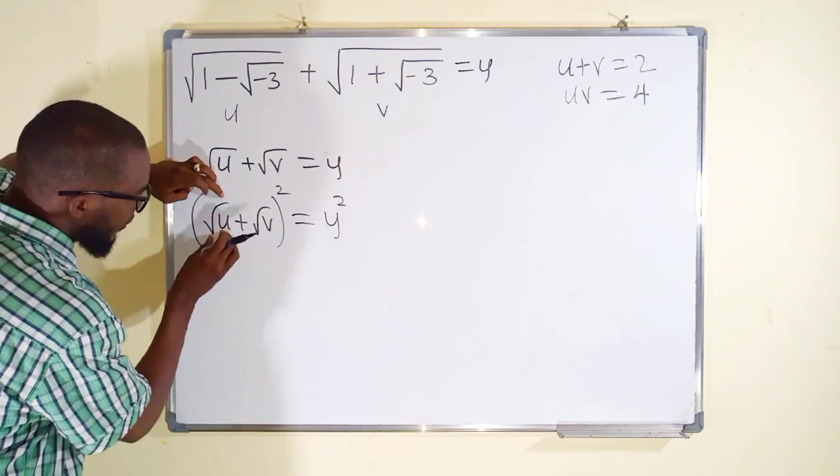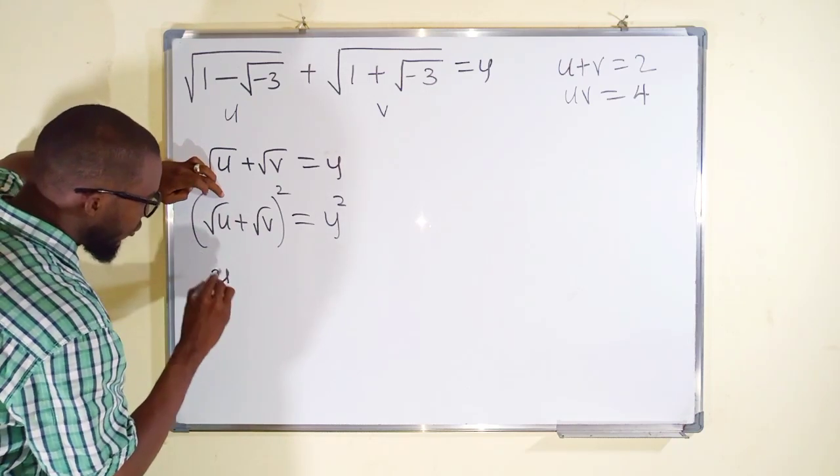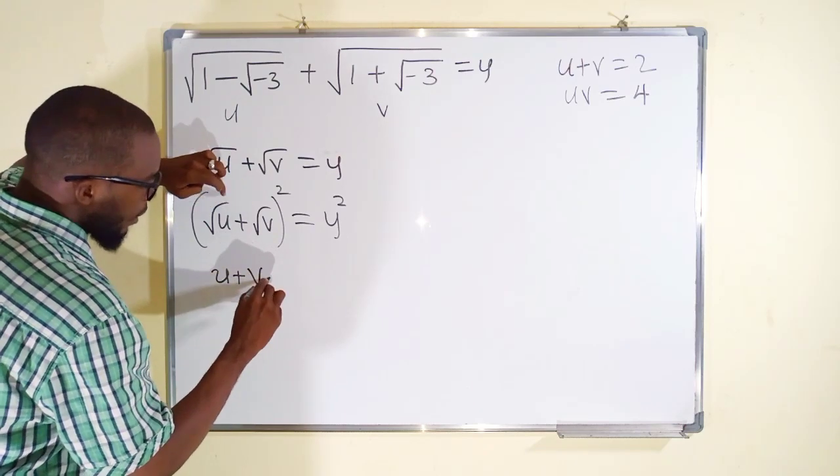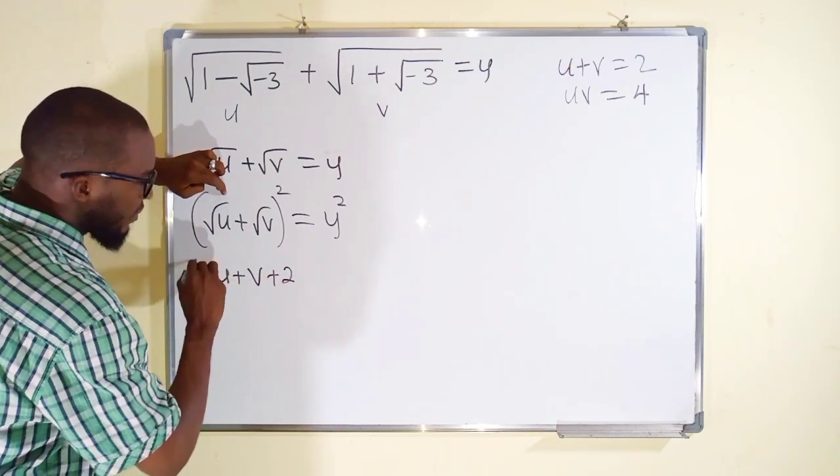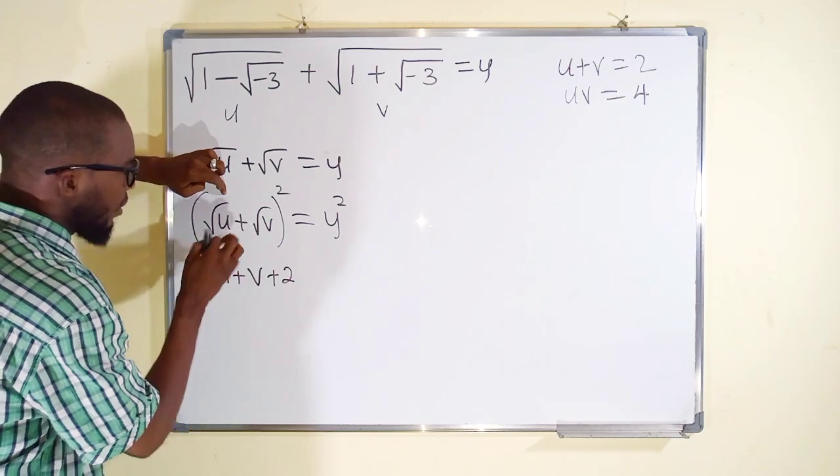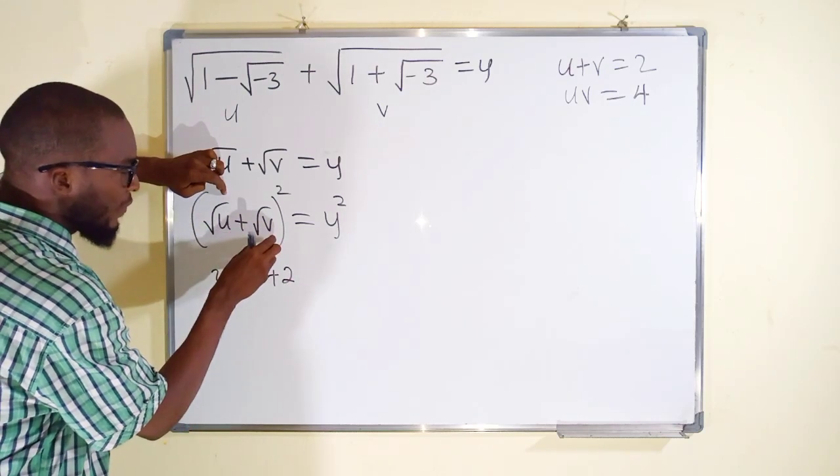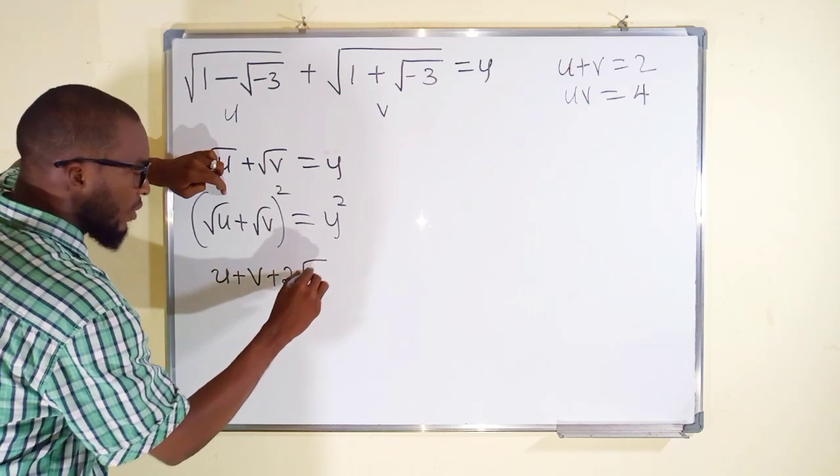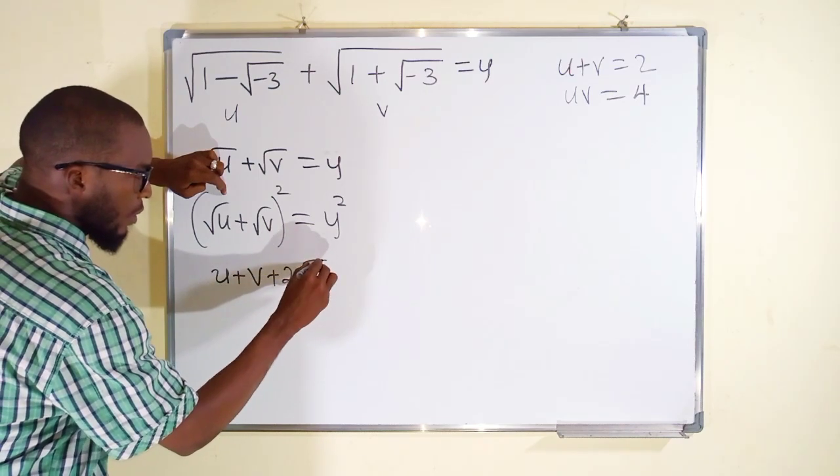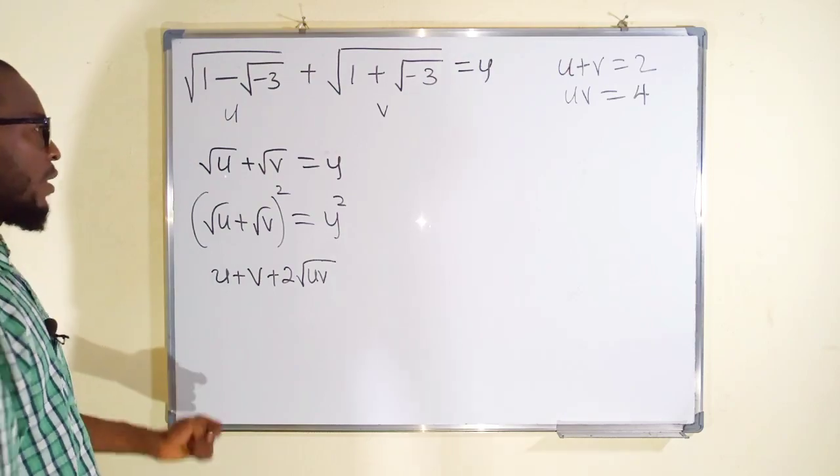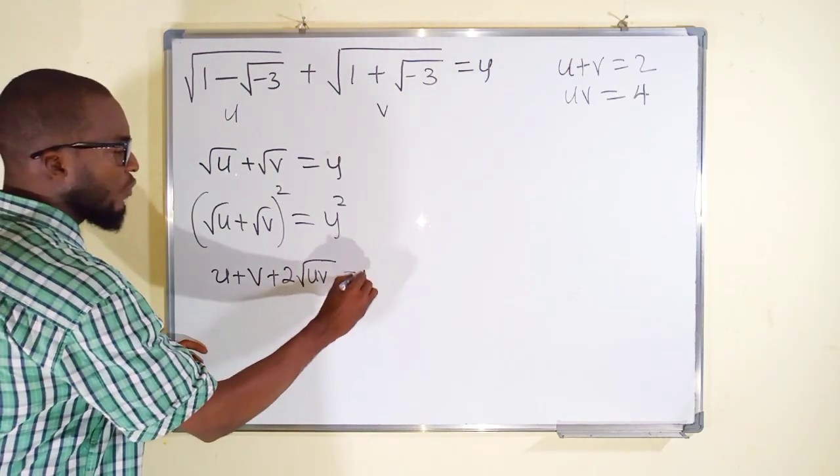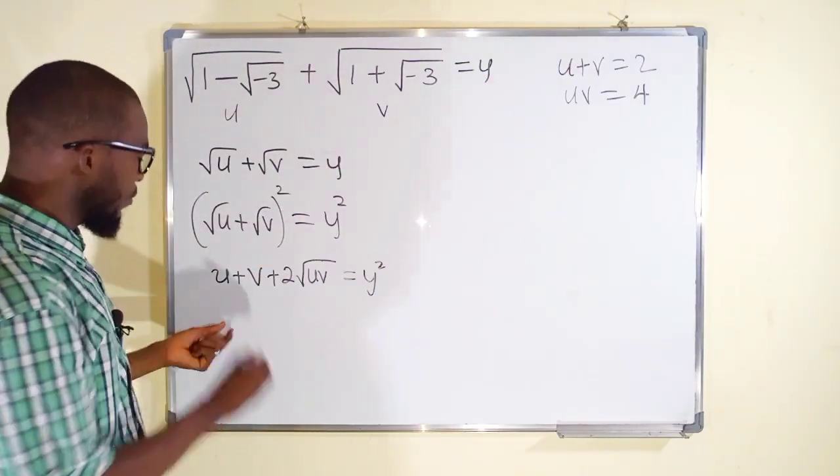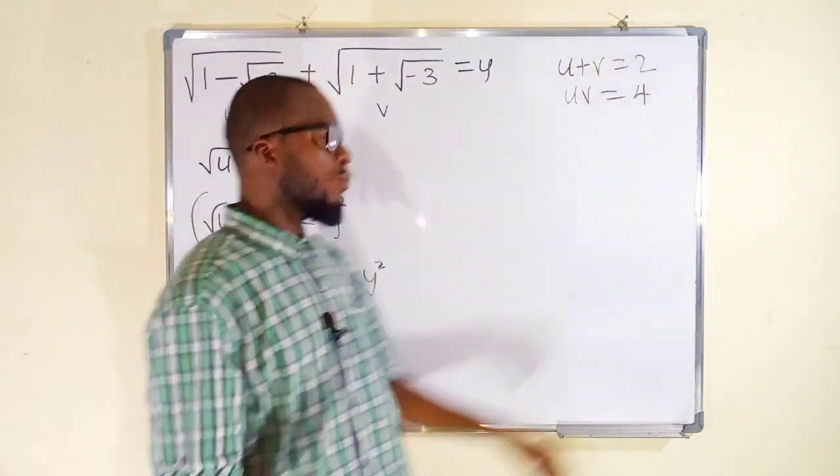So using binomial theorem, first term squared is going to make it u, plus second term squared is going to make it v, plus 2 multiplied by the first and the second term. √u times √v is √(uv), but we have 2 as a factor. This is equal to y². From there you can see that u + v we have obtained it to be equal to 2.